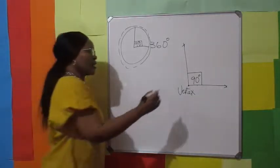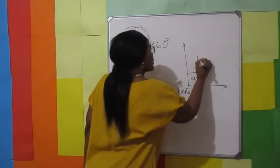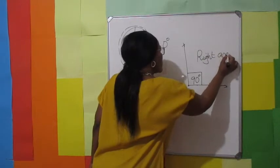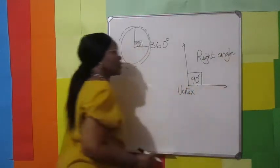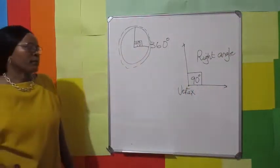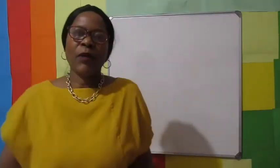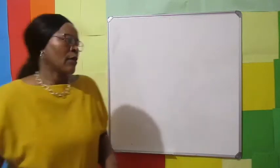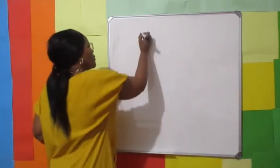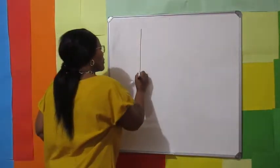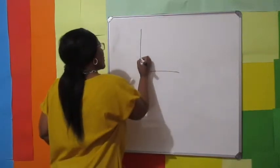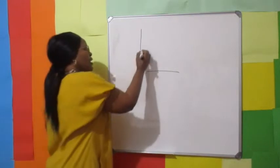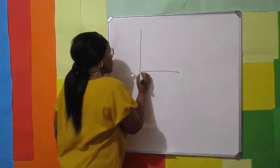This 90 degrees is the right angle. From this point — the vertex — we can see the right angle formed by the two rays at 90 degrees.